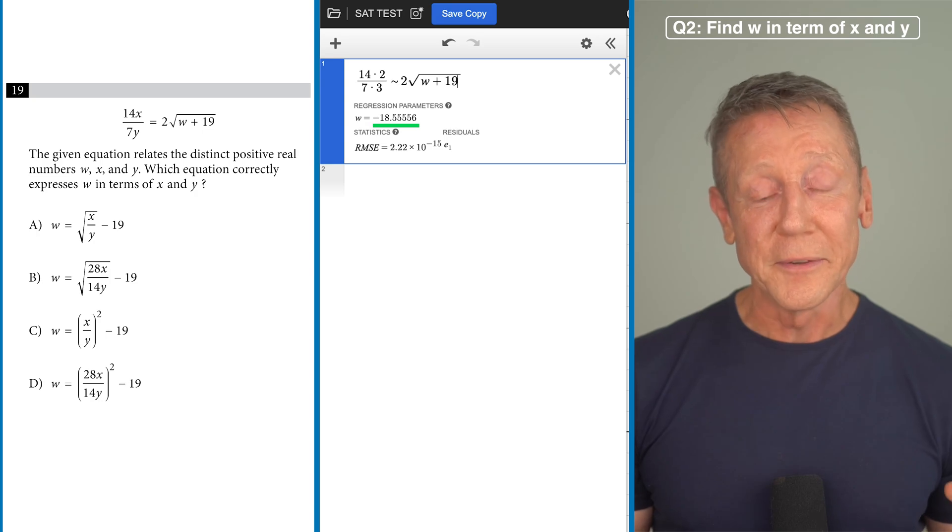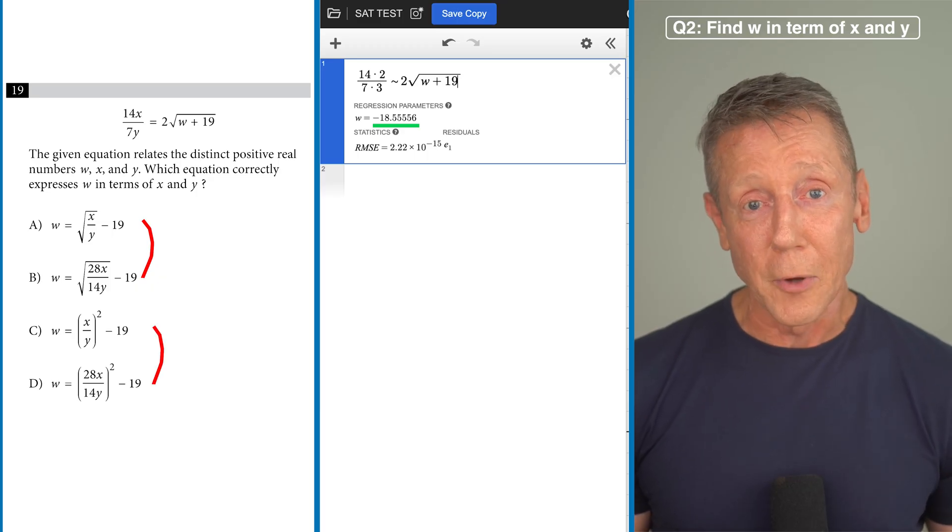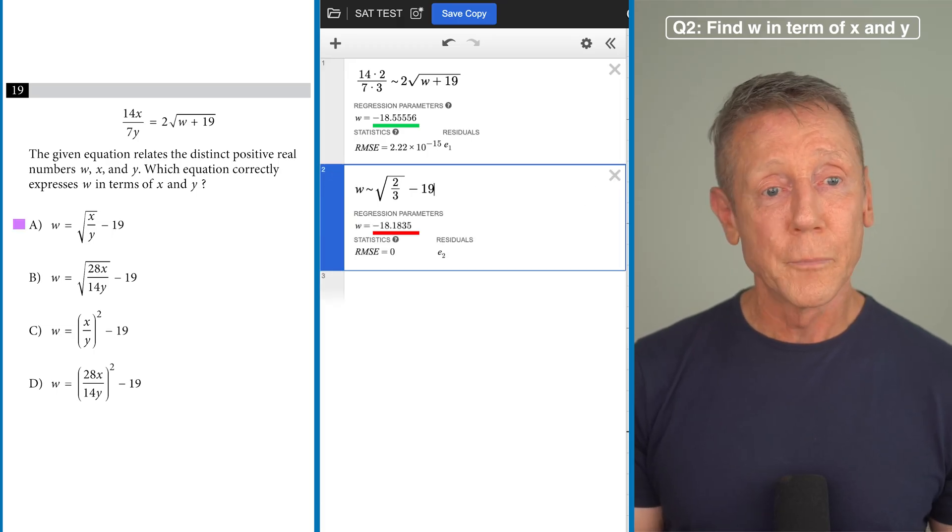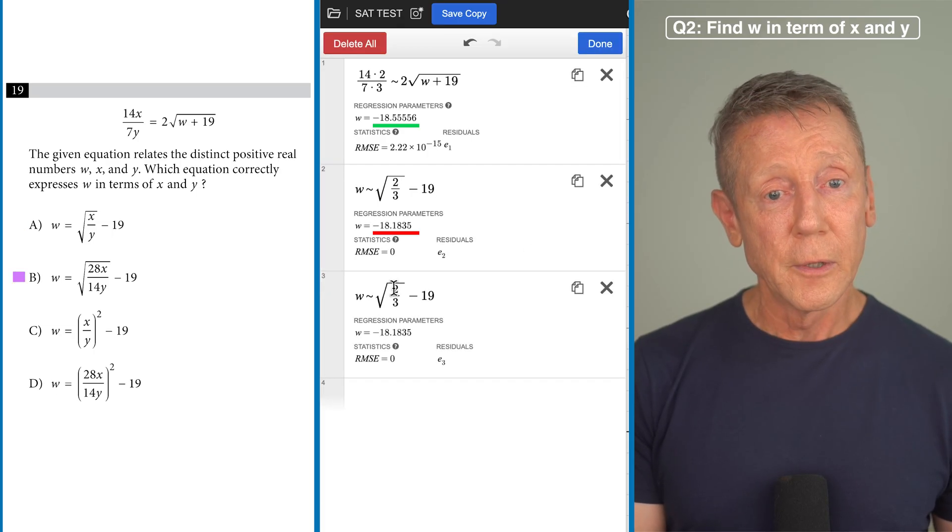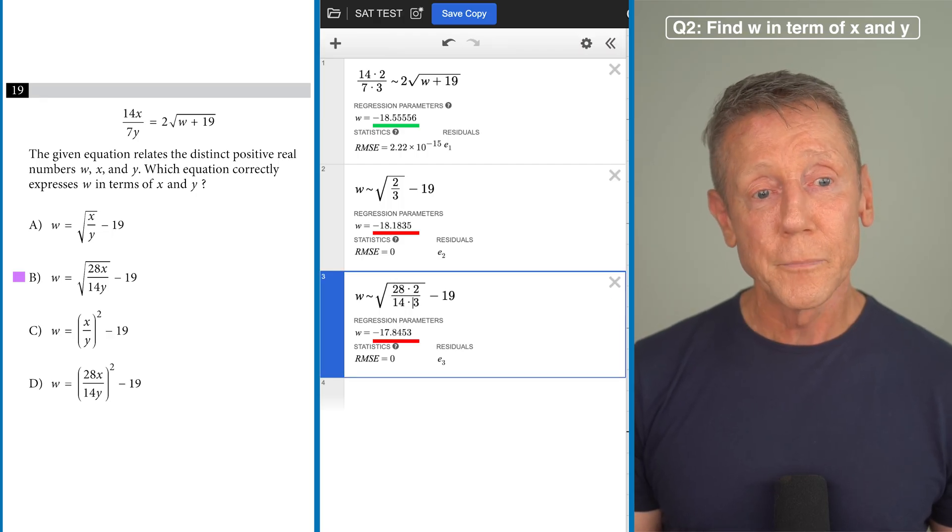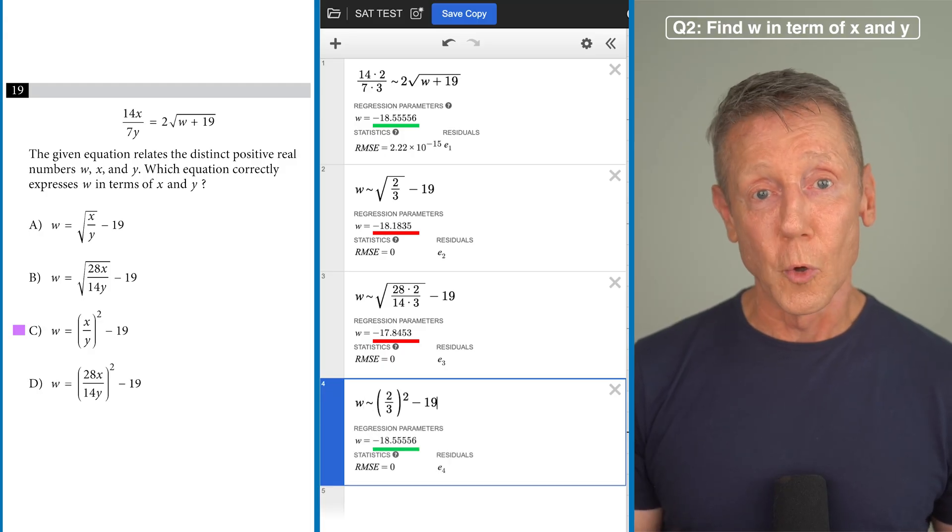Typing the given equation into Desmos using 2 for X and 3 for Y and there's our answer. Before we start typing, let's take a second to look at the answer choices. The first and the second are almost identical and the third and the fourth are also almost identical. So the duplicate button will save us a lot of time on these. Typing in the first one and we don't get the same answer.